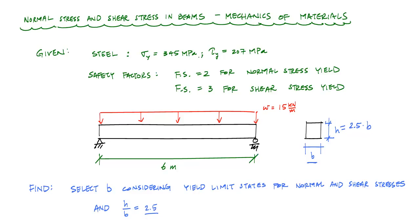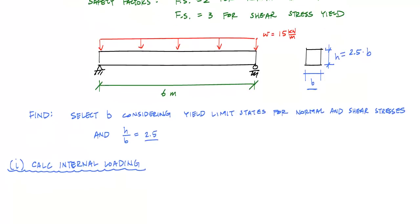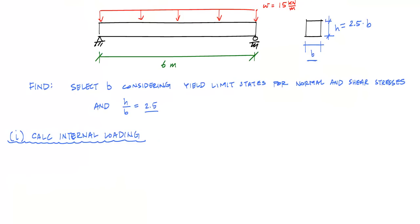The first thing I need to do is some basic statics to determine the internal loading. My structure is a simply supported beam, so it's a pretty easy analysis. I have a symmetric loading and symmetric boundary condition, so my reactions are going to be equal. The resultant of this distributed load is 15 times 6, which is 90 kilonewtons. Because these reactions are both equal, each of them is 45 kilonewtons. And from sum of forces in the horizontal, that force equals zero.